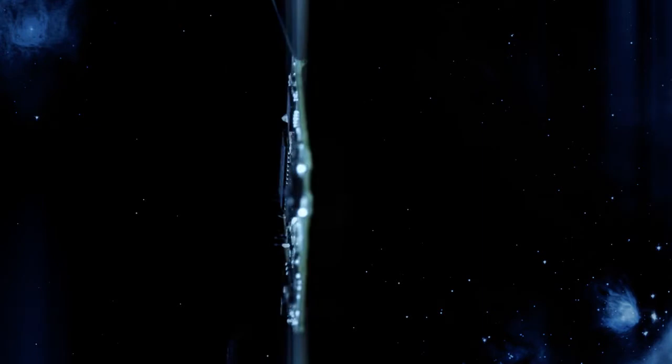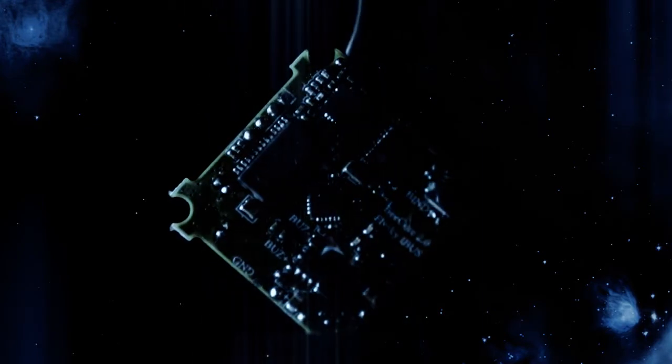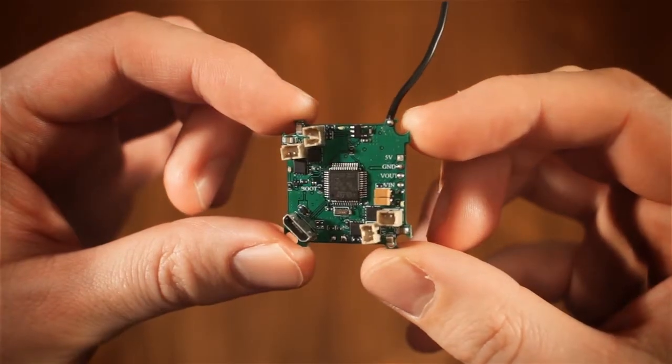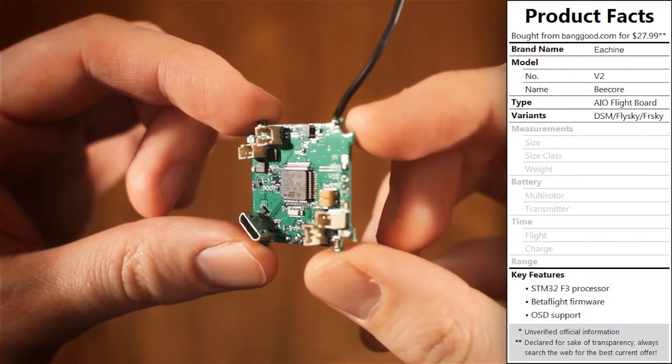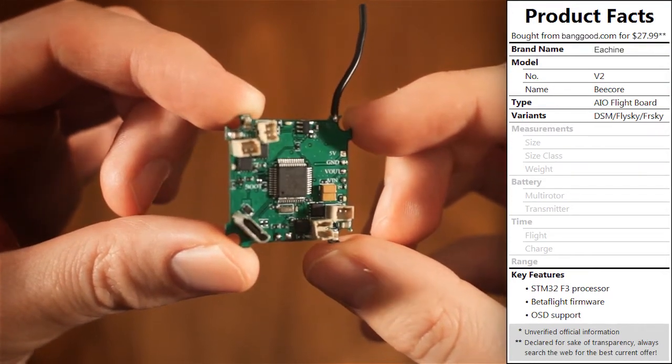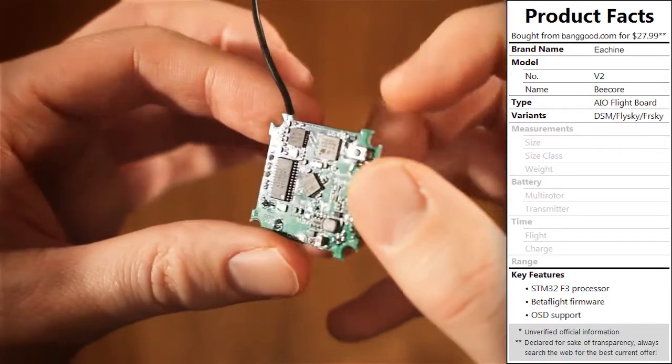This unassuming piece of electronics is the B-Core version 2, a replacement all-in-one flight board for quadcopters with a Blade Inductrix or Tiny Whoop style design. Its main advantage is its F3 flight controller with the popular Betaflight firmware, allowing you to configure things like flight modes and characteristics not otherwise possible on the Inductrix or most of its clones.